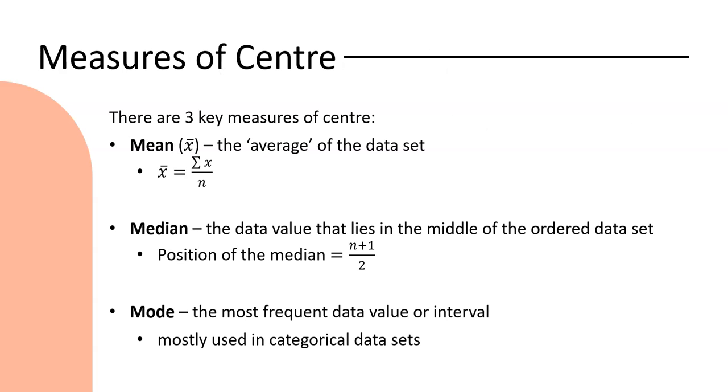So firstly our measures of spread. As we said, mean, median and mode are our three key measures. The mean we can see there is often referred to as the average of a data set. So that's the most common thing that we're used to seeing.